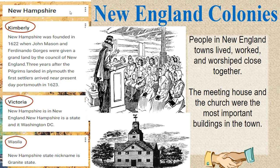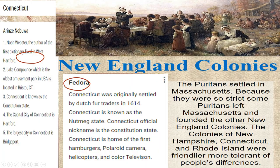People in New England towns lived, worked, and worshipped close together. The meeting house and the church were the most important buildings in the town — for a lot of us, that's still true today. You notice in the image you have the women on one side and the men on the other side. Connecticut is still part of the New England area. Orenze and Fedora were responsible for finding out about Connecticut. The Puritans settled in Massachusetts.